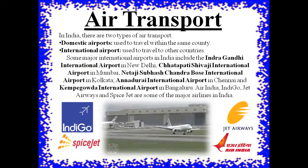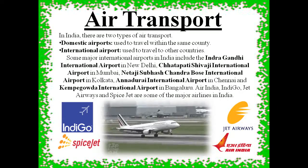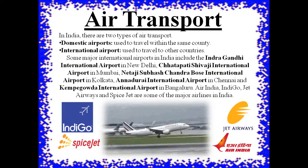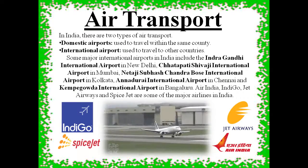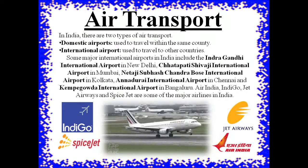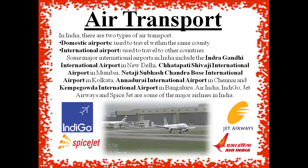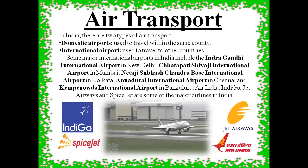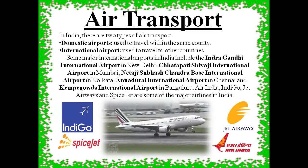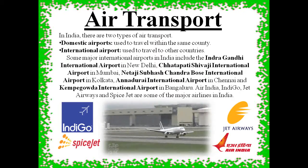There are two types of airports: domestic airports and international airports. Domestic airports are for travelling within the country — for example, from Kolkata to Delhi, Delhi to Mumbai, or Mumbai to Chennai. International airports are used when we travel to other countries. Some major international airports are located in Kolkata, Delhi, Mumbai, Chennai, and Bengaluru.